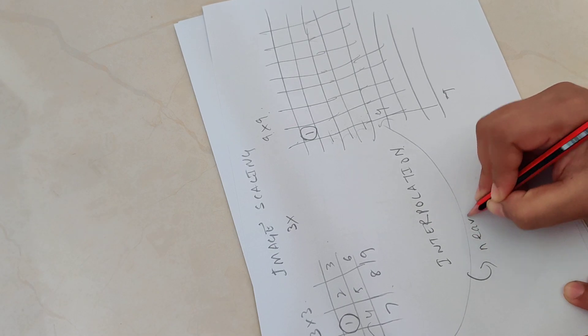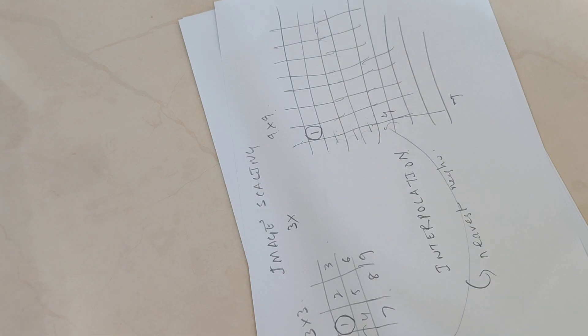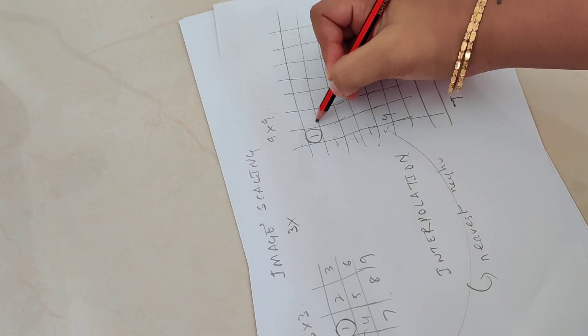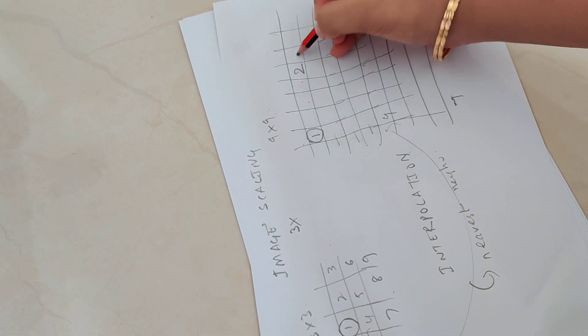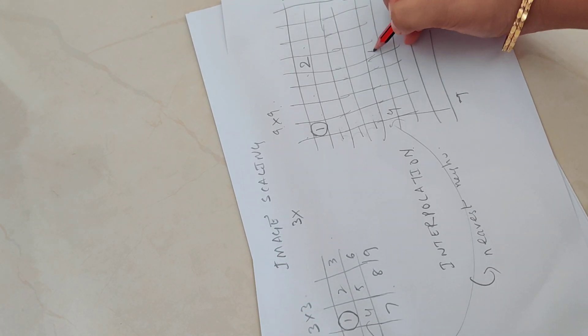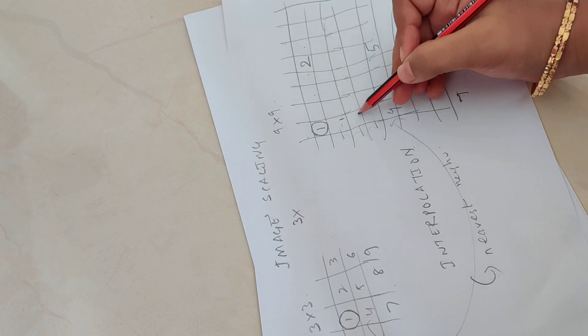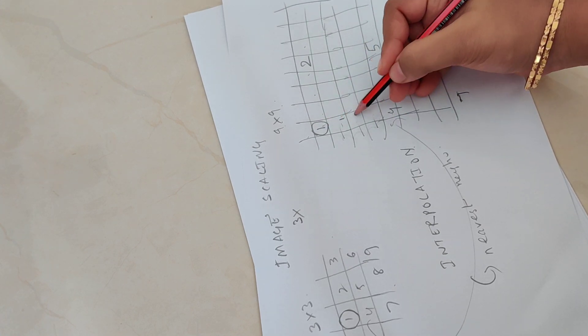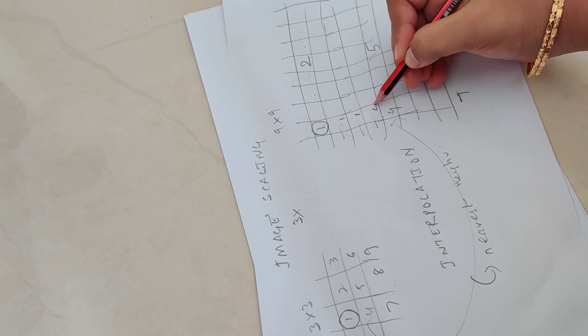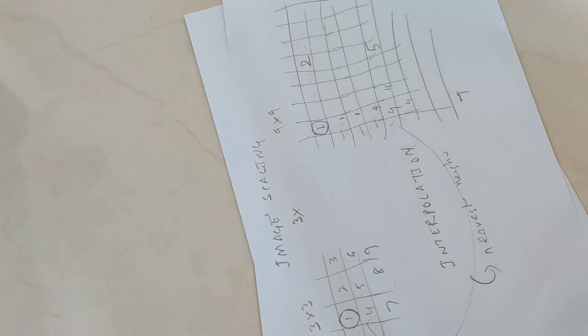One such option is nearest neighbor. So what this says is let me fill in this value as well, 3 and 2, and here it will be 5. Nearest neighbor for this pixel would be 1, nearest neighbor for this pixel is 1 and 4. Let's say it takes 1 and then for this will be 4. So it fills in this way.